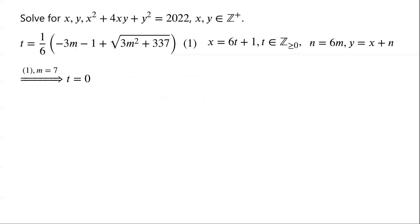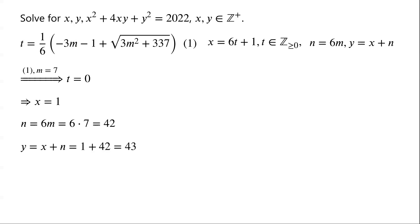From the equation, when m equals 7, t equals 0. As x equals 6t plus 1, so x equals 1. n equals 6m, so n equals 6 times 7, which is 42. y equals x plus n, which is 1 plus 42, which is 43. As the equality is symmetric about x and y, so (x, y) equals (1, 43) or (43, 1).